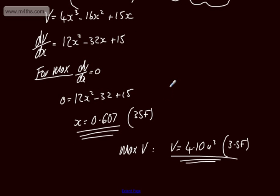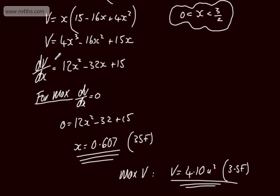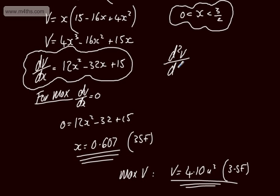If we wanted to show that this was a maximum, we would take the second derivative right here and show subbing in our value of x gives us a negative. So that's what we looked at. The definition of now a maximum for the second derivative is such that d²V by dx squared would be negative. So let's just prove that this is a maximum.